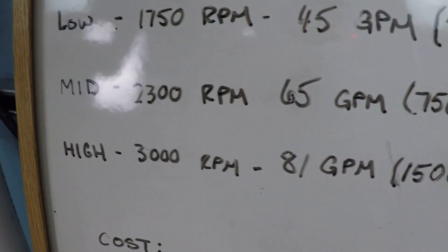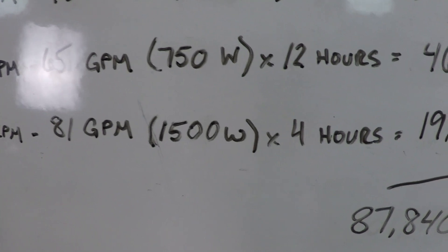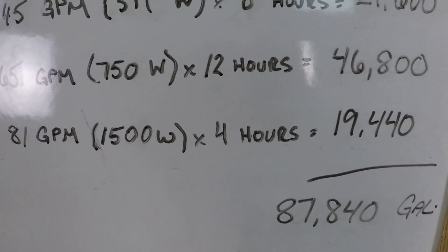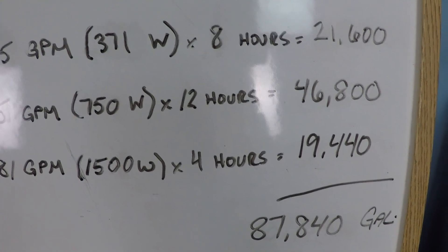The high is going to be 3,000 RPM, 81 gallons per minute, 1,500 watts of power consumption during that period. It's only for four hours that we'll be doing that, and that nets us 19,440 gallons.